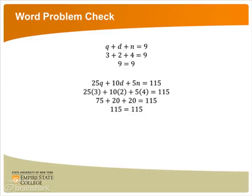2 times d minus n equals 0. Plugging in, 2 times 2 minus 4 should equal 0. 4 minus 4 should be 0. Which it does.